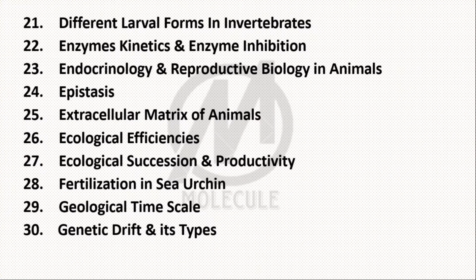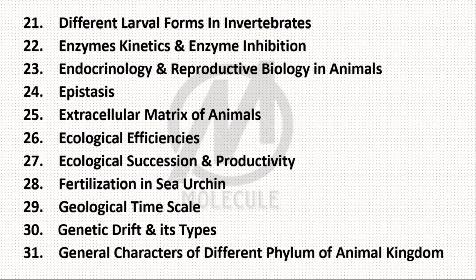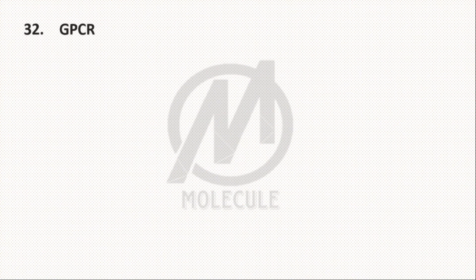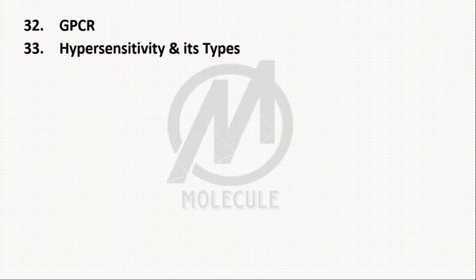For Genetic Drift, you should study Founder Effect and Bottleneck Effect in detail. Topic 31: General Characters of Different Phyla of Animal Kingdom. Topic 32: GPCR — G Protein Coupled Receptor. Topic 33: Hypersensitivity and Its Types.